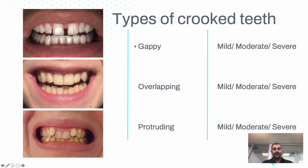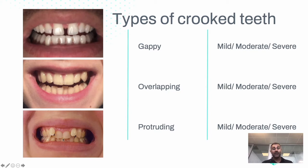The main thing to understand first is that there are different types of crooked teeth. We have gappy teeth, where there is a larger jaw or smaller teeth so the teeth have gaps and spaces between them. Then we have overlapping situations, where the arch is narrow and the teeth are overcrowded. Or we have protruding teeth, where some teeth have been pushed outwards completely and it's more visible from the side.